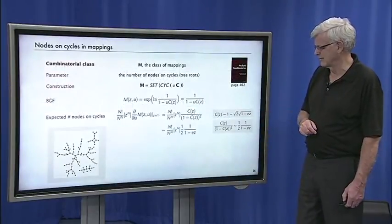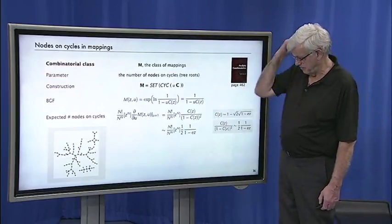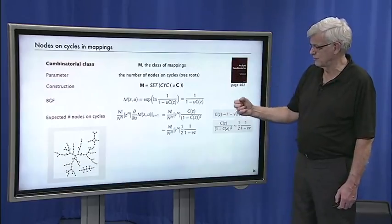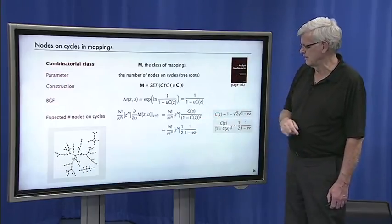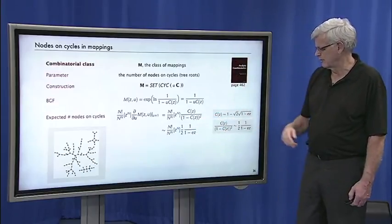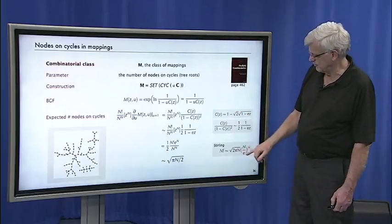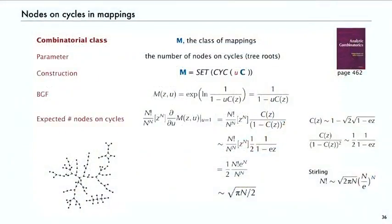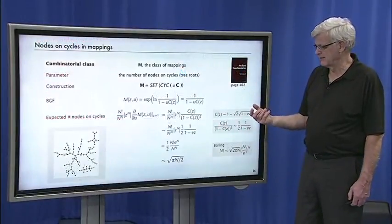So that gives us an approximation for the generating function for the expected number of nodes on cycles. And we want to get the coefficient of z^n on that. But that's just an expansion. It's just e^n/n·n^n. And then applying Stirling formula, the π comes back, √(π/(2π)) comes back. And so the average number of nodes on cycles is √(πn/2). Very straightforward calculations based on singularity analysis.